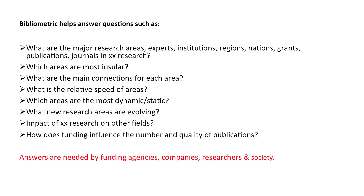Bibliometrics helps us to answer questions such as: what are the major research areas, experts, institutions, regions, nations, grants, publications, and journals in a particular research field? What areas are most insular? What are the main connections for each area? What is the relative speed of areas — how fast a research area is moving, whether it is dynamic or static? What new research areas are evolving? What is the impact of research on other fields? How does funding influence the number and quality of publications? These types of answers are needed by funding agencies, companies, researchers, and society at large.